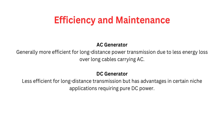Efficiency and maintenance. AC generator: generally more efficient for long-distance power transmission due to less energy loss over long cables carrying AC. DC generator: less efficient for long-distance transmission but has advantages in certain niche applications requiring pure DC power.